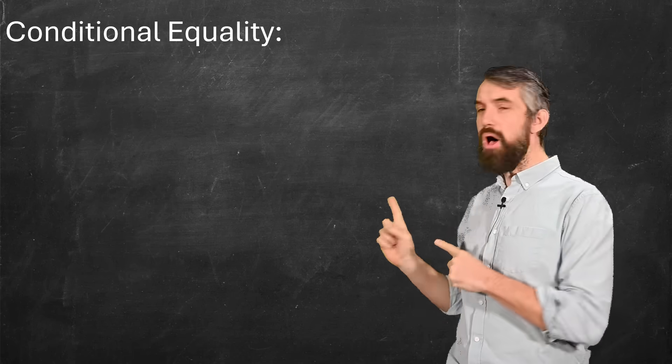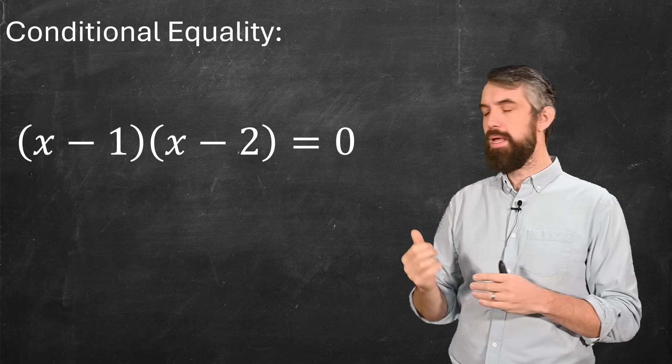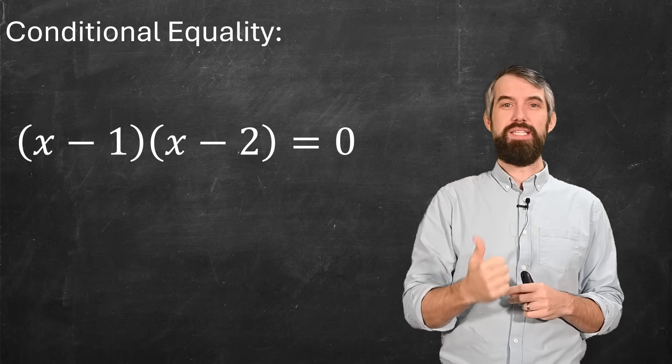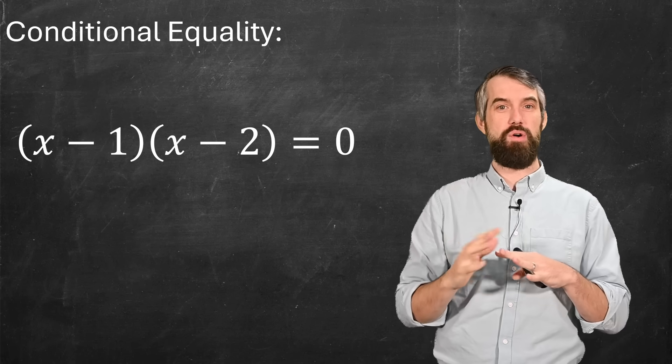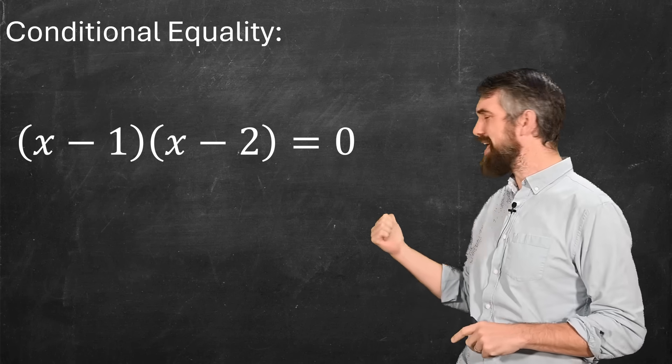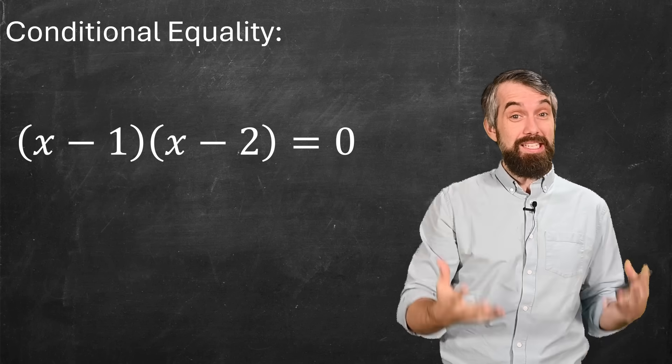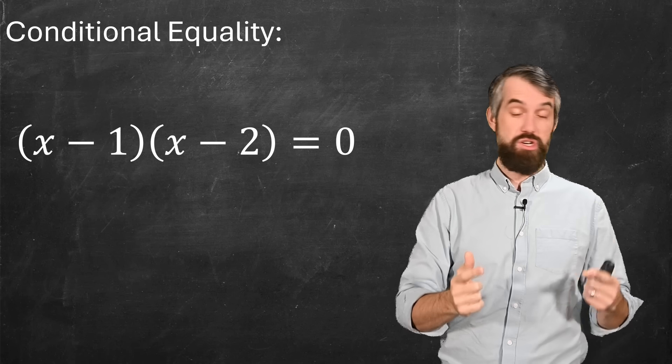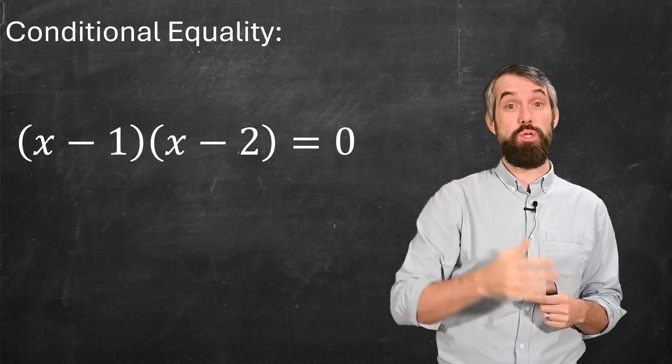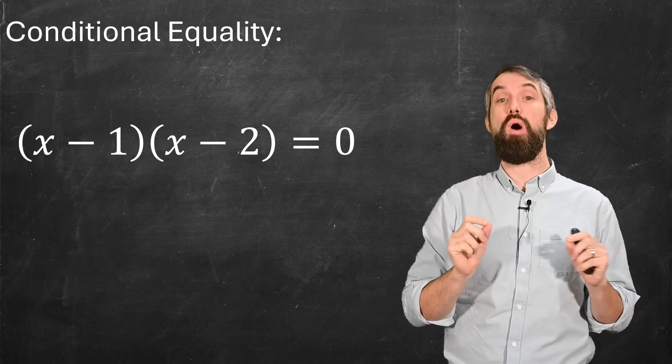But this is not the only option. I'll refer to conditional equality as an equation like this one: (x-1)(x-2) = 0. I've got an equal sign here, but this is not saying the things are always equal. It's only sometimes true. This is really asking a question: for what values of x is this expression true? And it turns out for x equal to 1 and x equal to 2, and only those two options, this represents the same number on both sides.